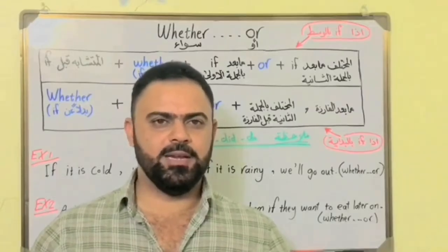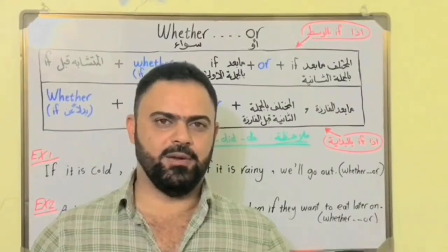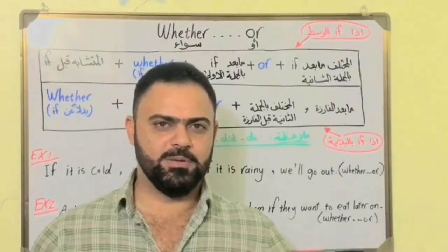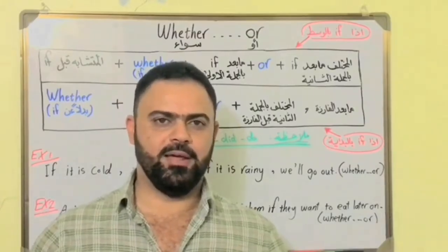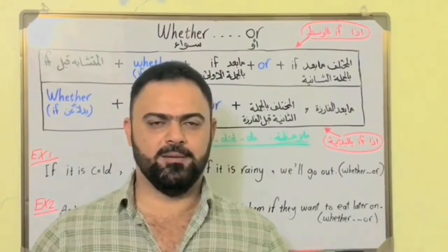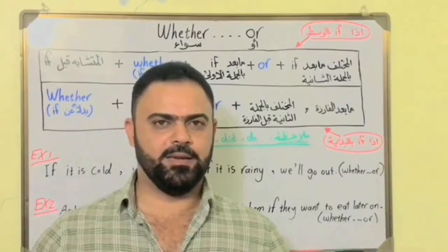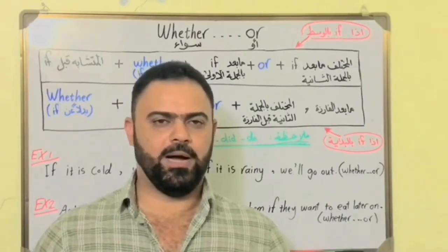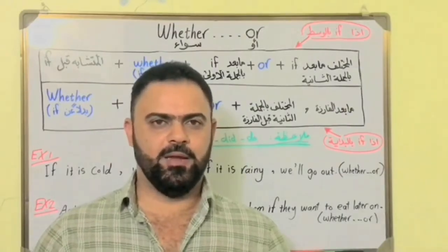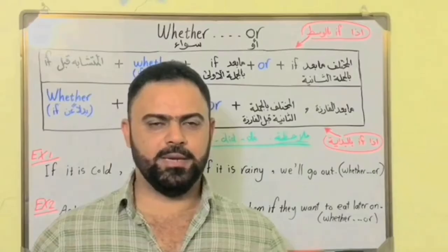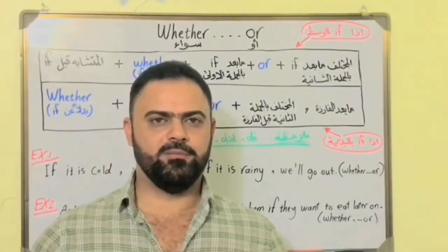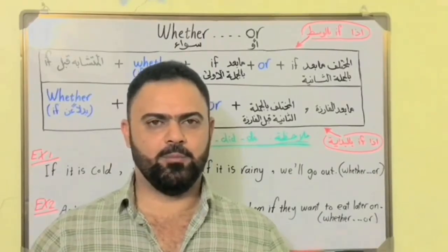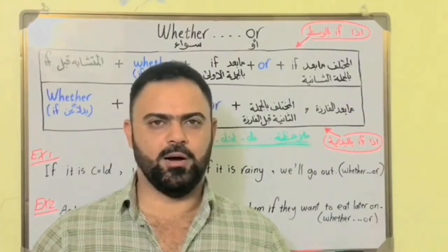هو رح ينطيني بالسؤال جملتين — الجملتين بها if، لأنه احتمال واحد. بالجملة الأولى احتمال، وبالجملة الثانية أيضا احتمال، واثنتا الاحتمالين يكونن بعد if. المطلوب عمل جملة واحدة ووضع هذين الاحتمالين في الجملة الواحدة باستخدام whether or — سواء أو.